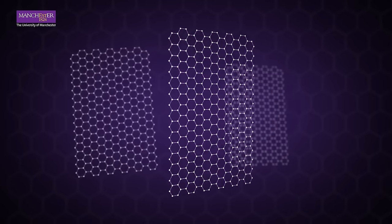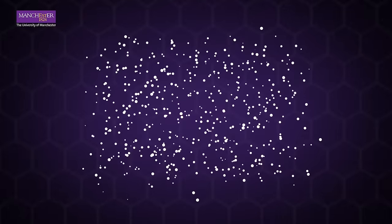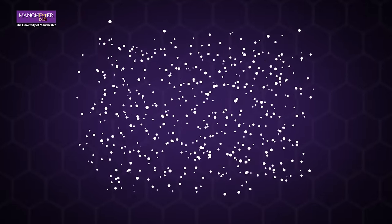Graphene is an amazing new material. It was discovered in 2004 and it consists of carbon atoms arranged in a perfect hexagonal lattice.